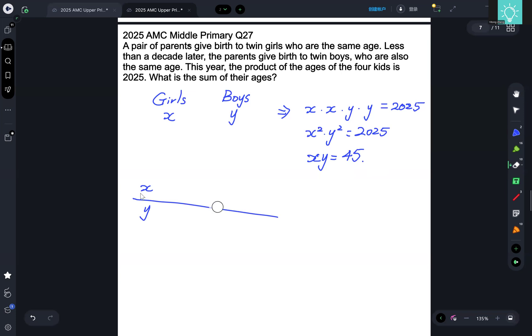We're going to start with 45 and 1. That doesn't work because the difference between the ages has to be less than 10. It says less than a decade later, so that means the differences between the ages have to be less than 10. So 15 and 3 would not work.